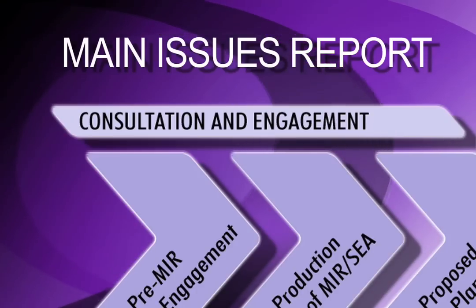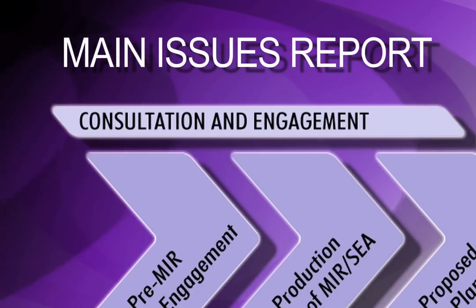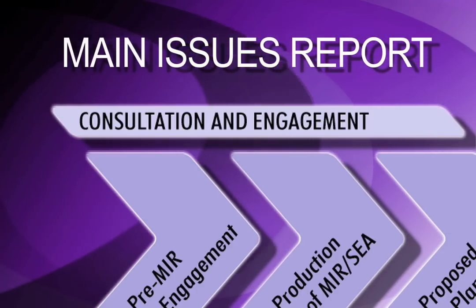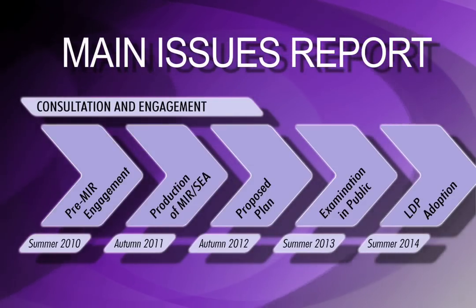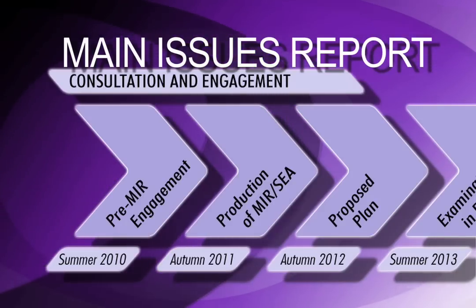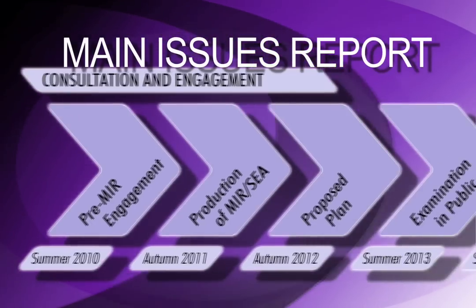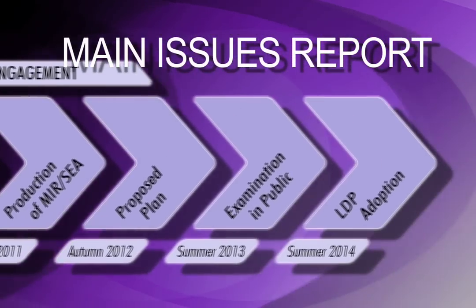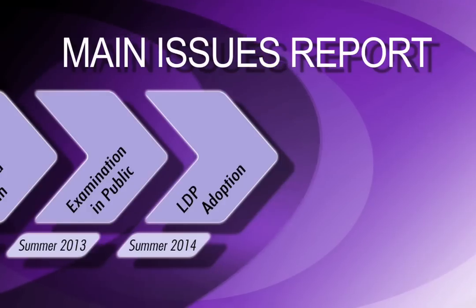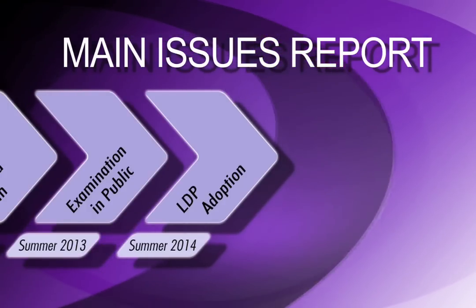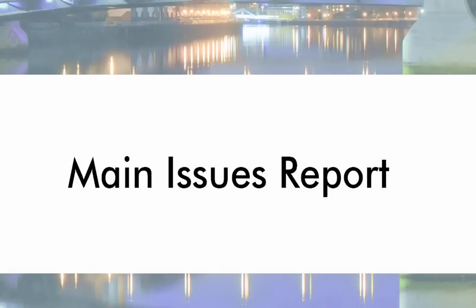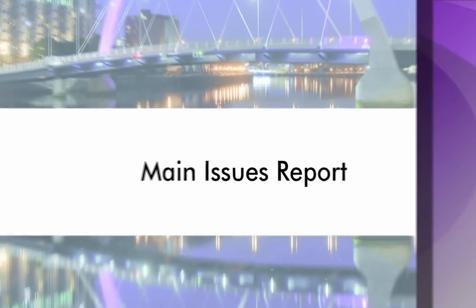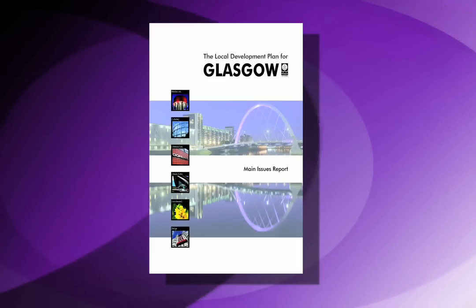The main issues report is the first key public consultation stage in the production of the local development plan. It is not a draft version of the plan, but focuses on the key changes that have occurred since the preparation of City Plan 2 and identifies the main issues that the plan itself will have to address. We hope that you can find time to have a look at the main issues report and let us know what you think.